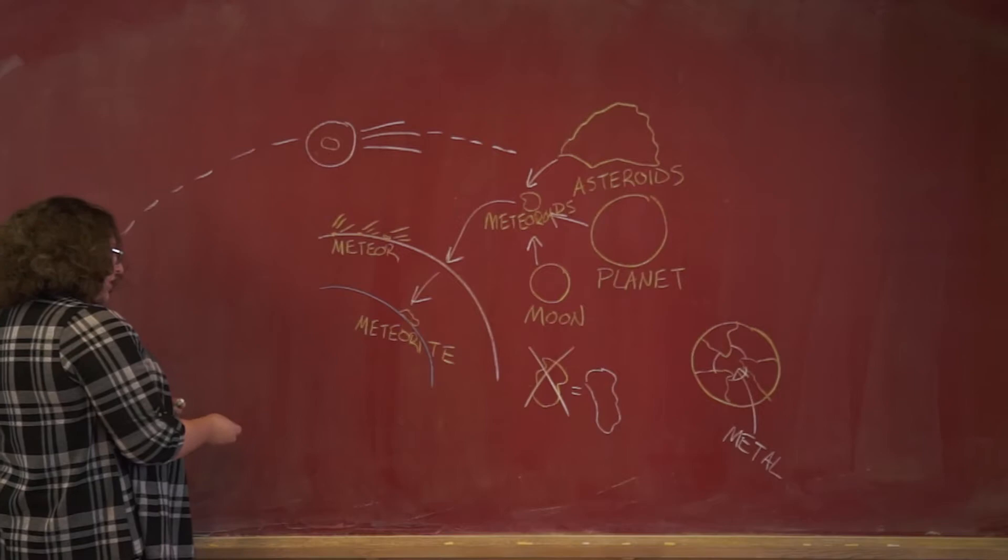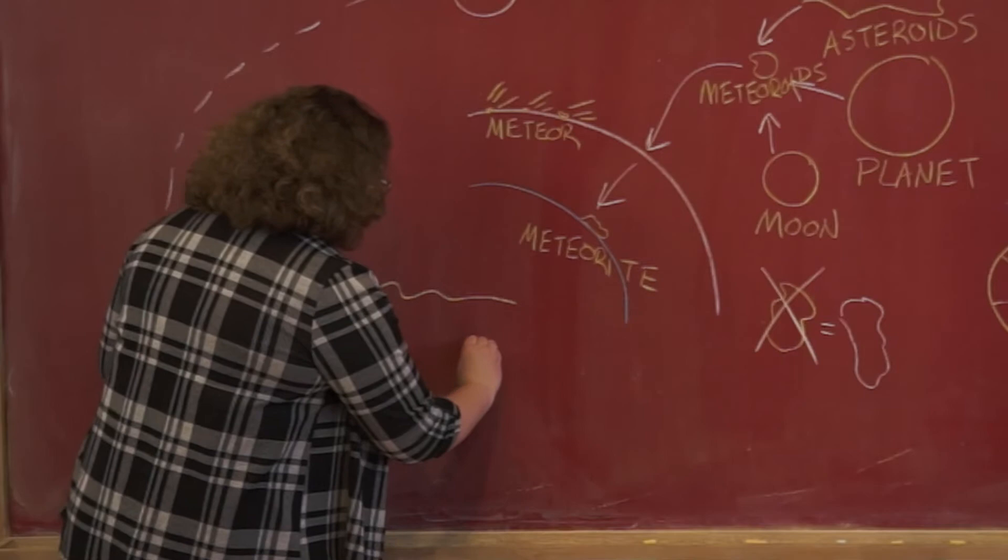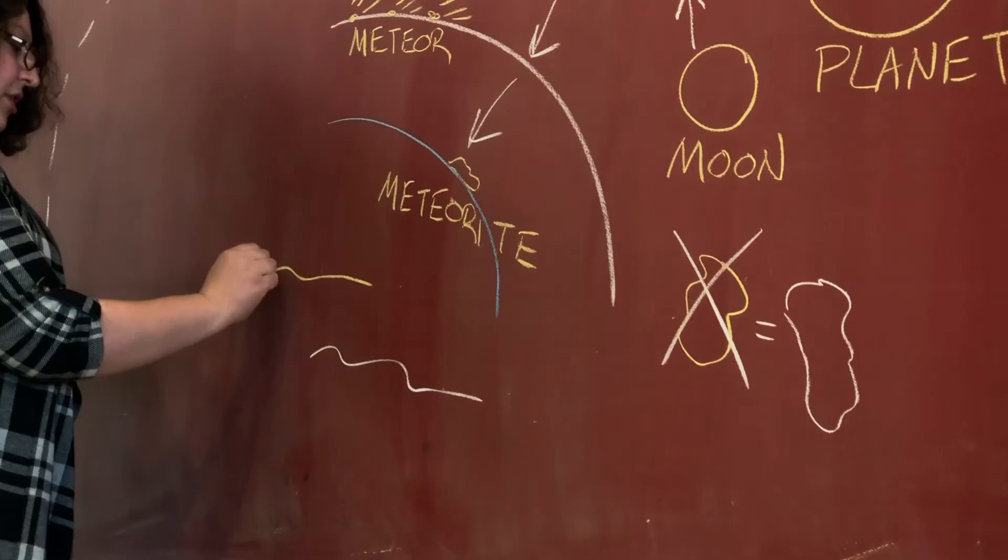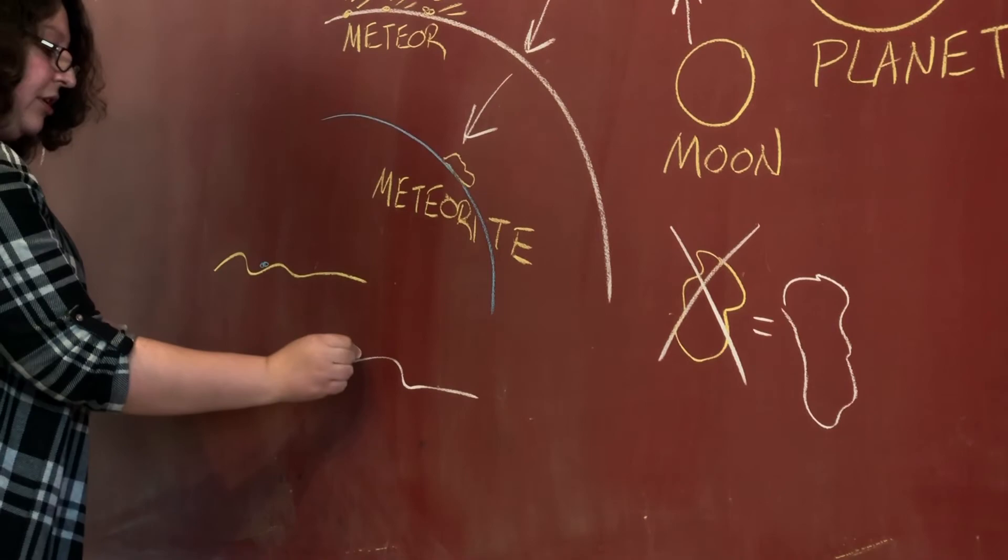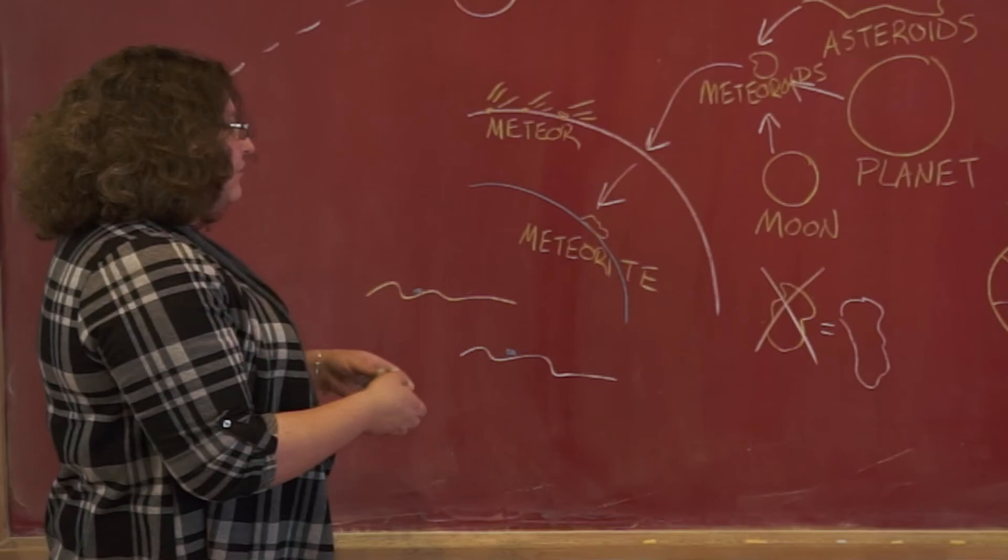So instead, you have to look for those types of objects in large homogeneous locations, places like the desert, the Serengeti, or Antarctica with large ice sheets, where very different composition meteorites would actually condense and then be able to be easily spotted.